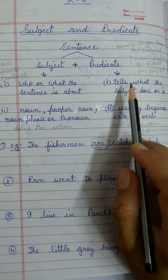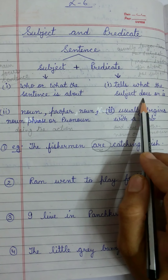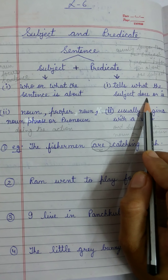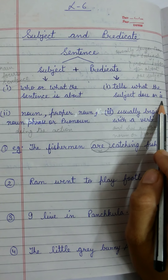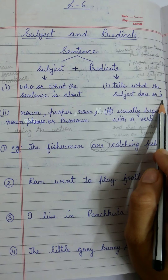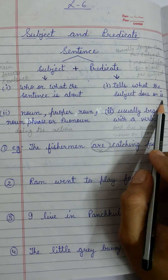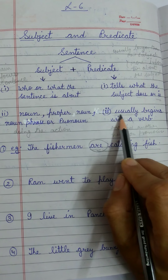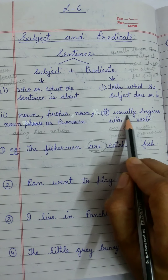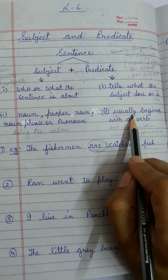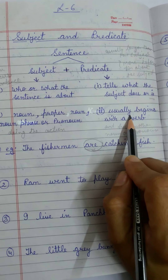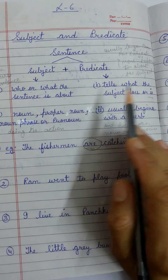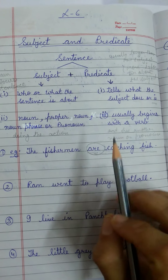Predicate tells me what the subject does or is. That means an action done by my subject, or any quality or feature of my subject, will be my predicate. My predicate usually begins with a verb — it is not always, but most of the time it begins with a verb. And children, my predicate is usually a little longer compared to my subject.